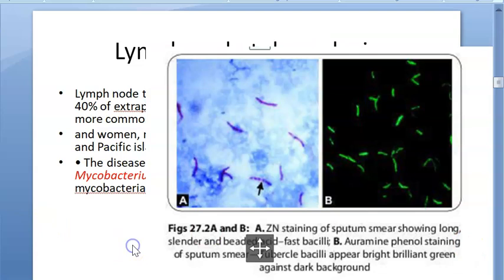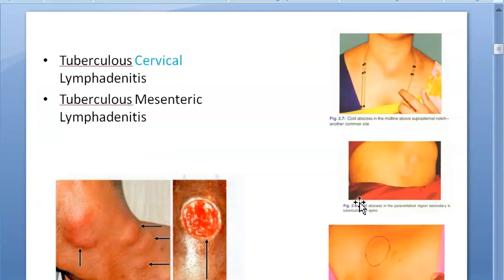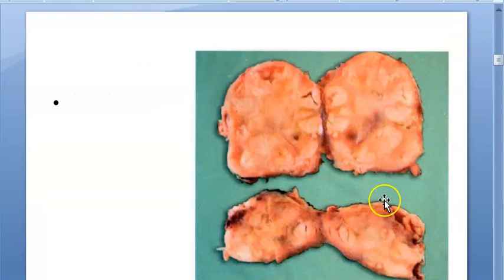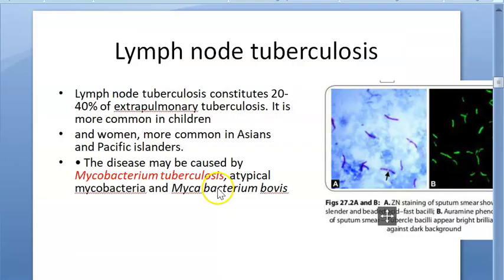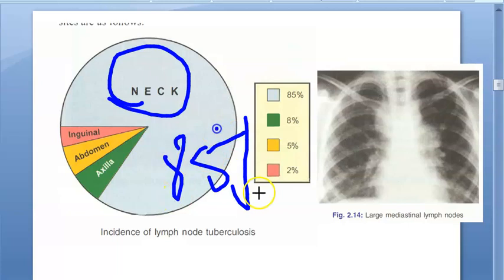So this is all about the introduction to tuberculosis lymphadenitis. The lymph node will contain yellow caseating material, and matted lymph nodes are a hallmark of tuberculosis. Mostly the neck lymph nodes are affected — 85 percent of lymph node tuberculosis will actually affect the neck. Others can be mediastinal, axilla, abdomen, or inguinal.